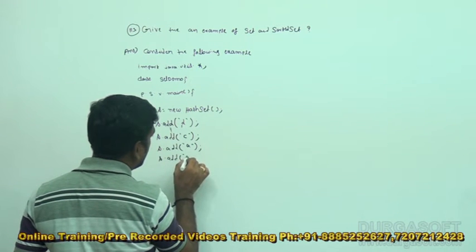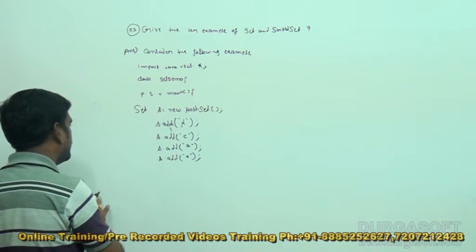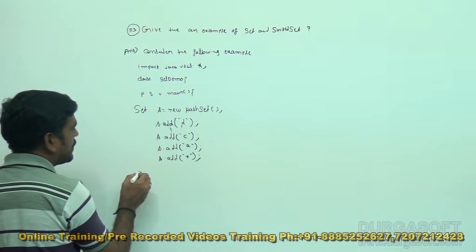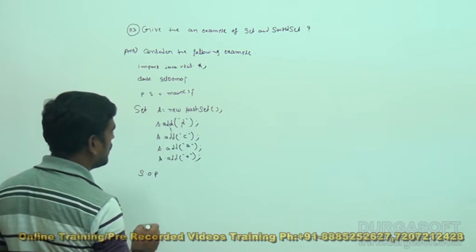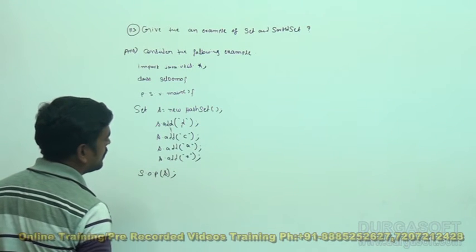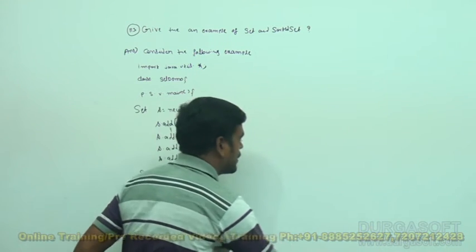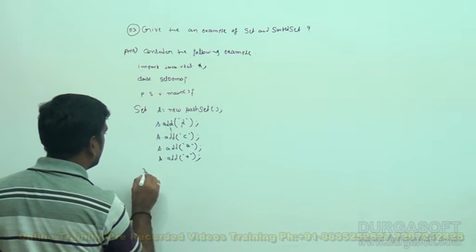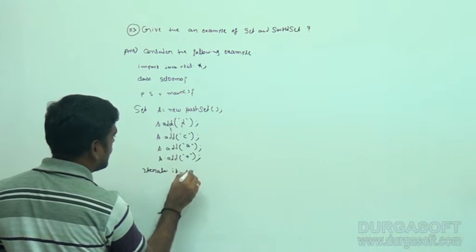Now here I am taking X. After that we can print these values. How to print: system dot out dot println. Otherwise we can use iterator and we can print, there is no issue. Iterator it is equal to S dot iterator.